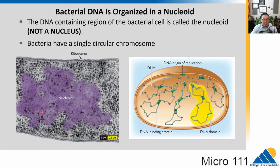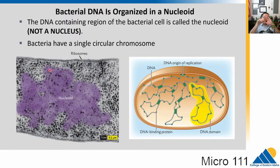Bacterial DNA is not just floating around in chaos — it is organized. This is important because when we talk about transcription and translation — making RNA and making protein — in eukaryotes it's a bit slower because the DNA is in the nucleus, RNA gets made, but then it has to go outside the nucleus to become protein. In bacteria, all of this can happen at once. So bacteria are super fast at living and reproducing.